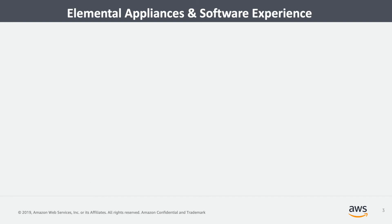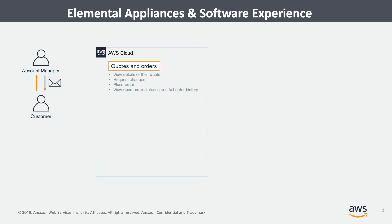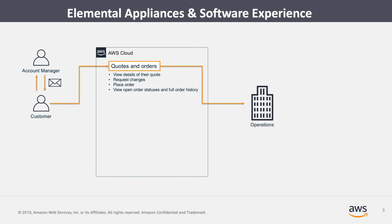Now let's take a look at how the AWS Elemental Appliances and Software Service simplifies this customer experience. Like before, the process begins with the customer working with their account manager, who after some back and forth will send them a sales quote for the products they're interested in. Once the customer receives the quote from their account manager, they can log in to their AWS account and view that quote through our Quotes and Orders service. They can either request changes or they can enter their shipping and billing address information, upload their purchase order, and place their order.